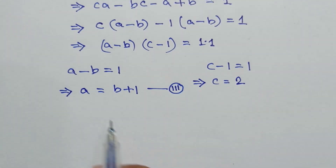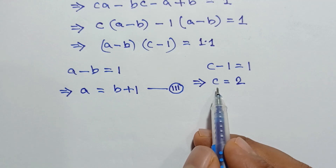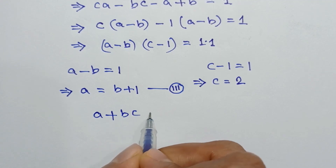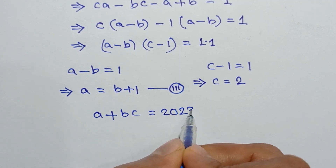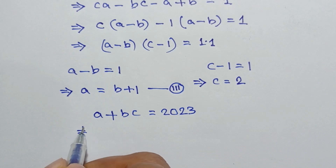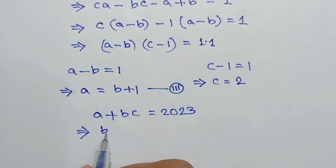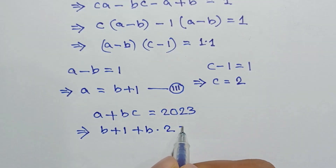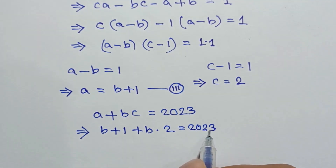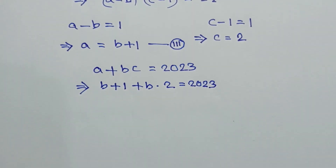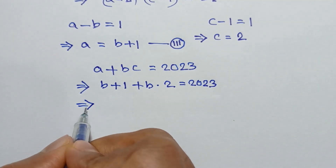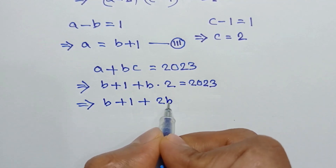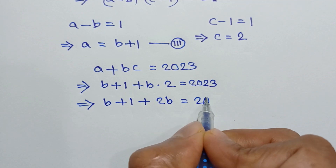Putting the values of a and c into equation number one: a plus bc equals 2023. Since a equals b plus one and c equals two, we substitute to get b plus one plus b times two equals 2023.